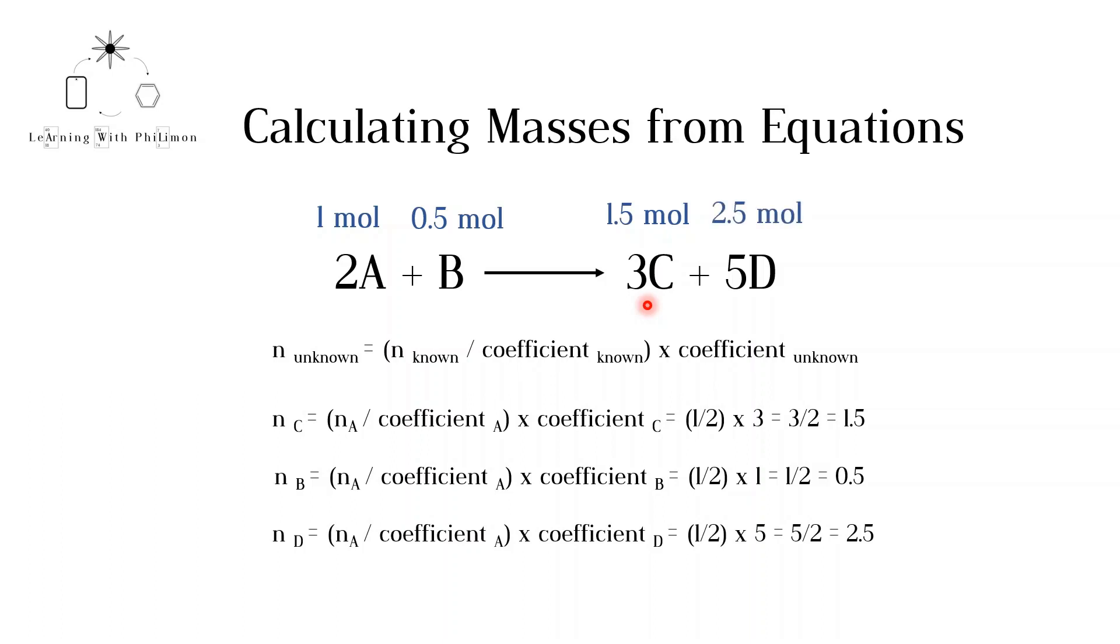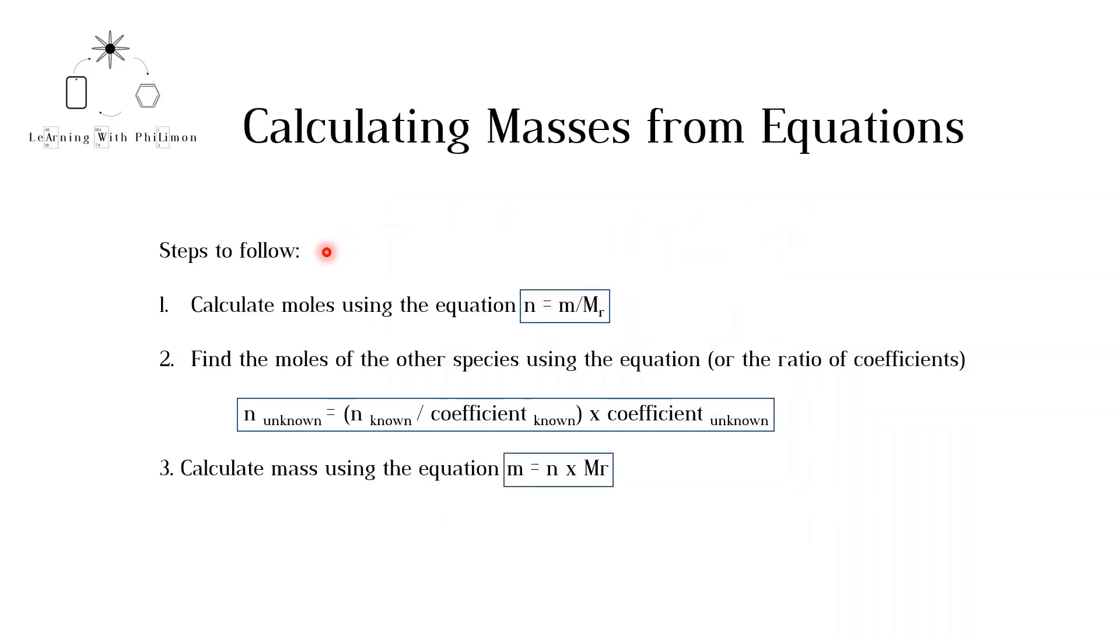As we saw in this example, if you know the moles of one reactant or product, you can figure out the number of moles of the rest of the species. In order to avoid confusion in these types of questions, I would recommend that you always use the following three steps. Firstly, calculate the number of moles using the equation N is equal to M over MR. Secondly, find the moles of the other species using this equation or the ratio of coefficients. Finally, calculate the mass using the equation M is equal to N multiplied by MR.